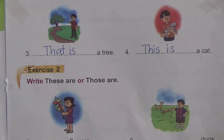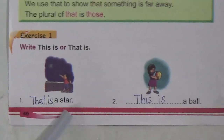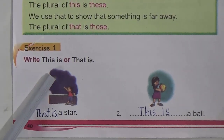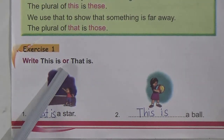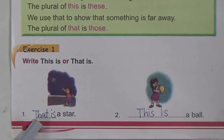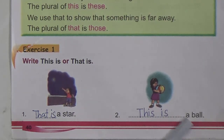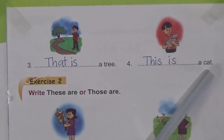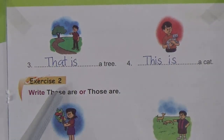So when something is singular — that means when we are talking about one person, one thing, one animal, or one bird — we will use 'this is' or 'that is'. We use 'this is' when something is near us, and 'that is' when something is far away. So our sentences are: that is a star, this is a ball, that is a tree, this is a cat.